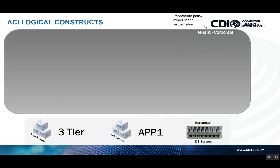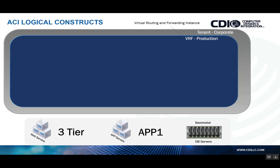In ACI, we start off by creating a tenant, which is a logical container representing the policy owner in the virtual fabric. Within the tenant, we create one or more Layer 3 contexts, or VRFs — virtual routing and forwarding instances. We can have one for production, one for dev, one for QA, one for DMZ, etc. It all depends on your design. With the most current version of Cisco ACI, you can deploy up to 32 VRFs in a single tenant, and you can have hundreds of tenants.